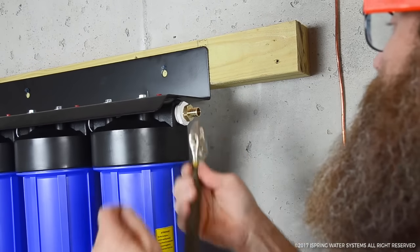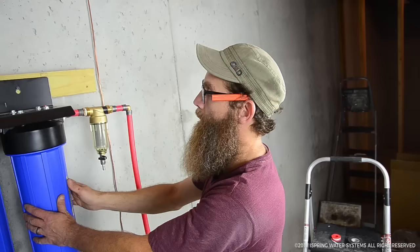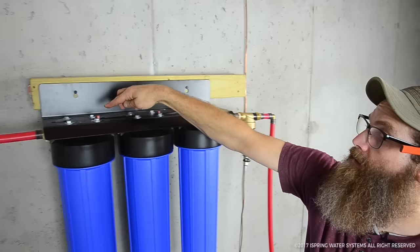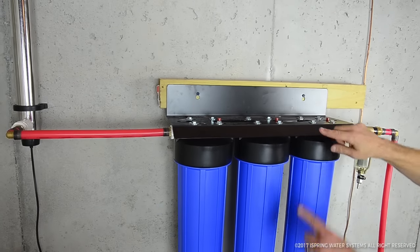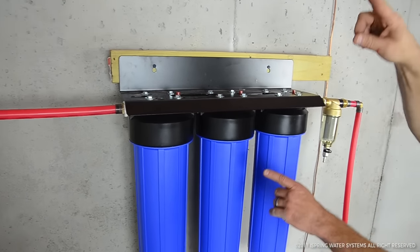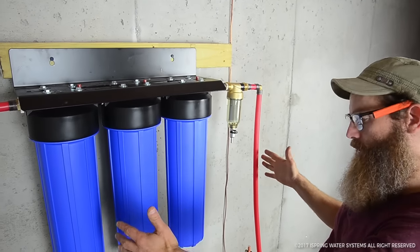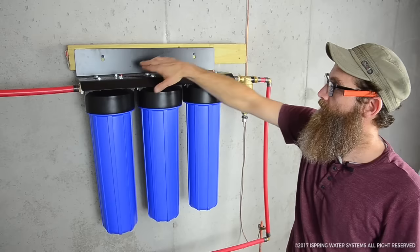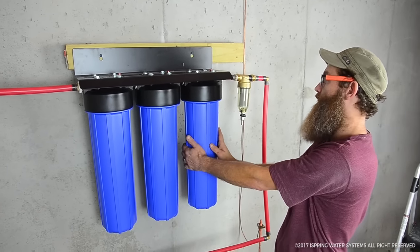When we do change these filters out, before we unscrew this, there's a pressure relief button here and here and here, and that will release the pressure that's inside of this closed loop system. There's just a small closed loop here that has pressure still on it and we just release it with those buttons and then this just comes off.